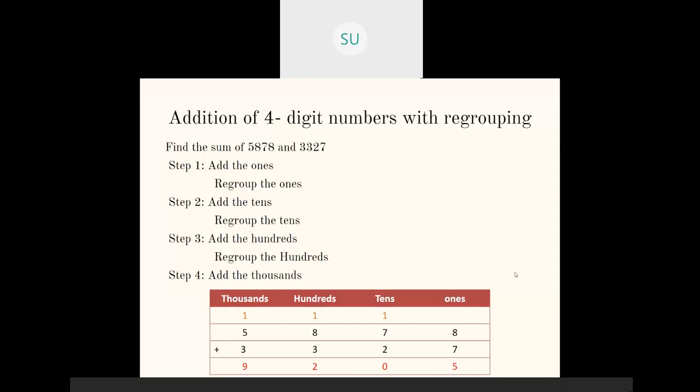Then we add the hundreds place. In hundreds place we have one which is carried over, then eight and three. So one plus eight is nine, and nine plus three is twelve. So we have twelve hundreds. That twelve hundreds we regroup as one thousand and two hundreds. The two hundreds we write in the hundreds column and the one thousand we carry over to thousands place. In thousands place we have one carried over plus five plus three, which is nine. So the answer is 9205.